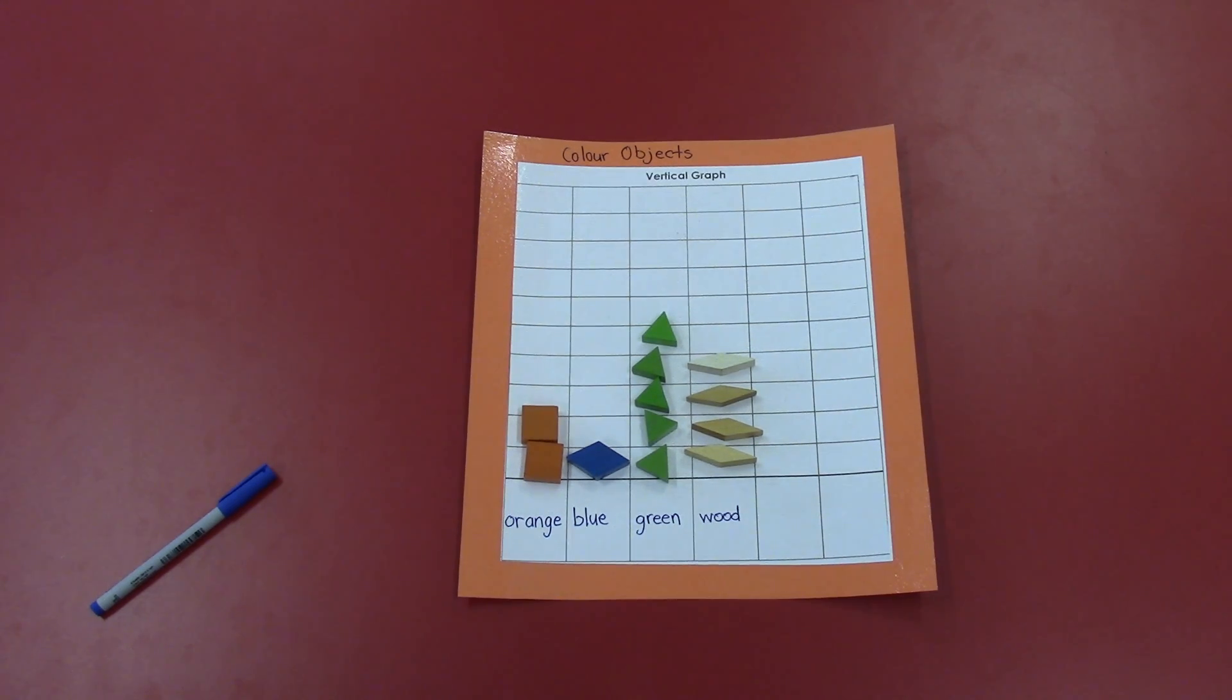Once I'm done, I usually like to ask other people questions. Can you tell me how many wood objects I have in all? Can you tell me how many more wood there are than blue? If you said that there are four wood objects in all, you're right. And if you told me there were three more wood objects than blue, you're also correct.